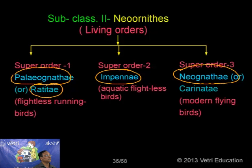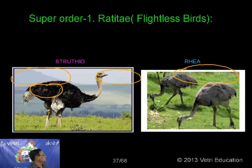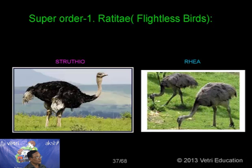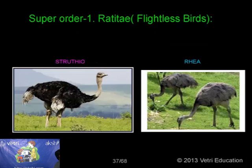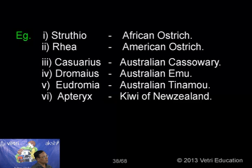Now, super order one — Palaeognathae — which includes the flightless birds. For example, Struthio is an example for the African ostrich, and Rhea is an example for the American ostrich. Struthio — the African ostrich — is the largest bird, laying the largest egg also, and is the fastest runner.